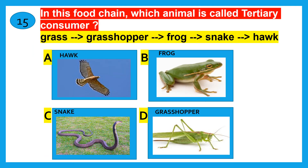In this food chain, which animal is called the tertiary consumer? Hawk, frog, snake, grasshopper? The correct answer is snake.